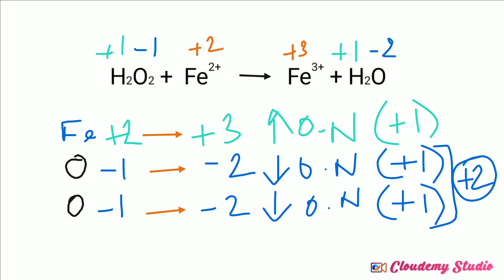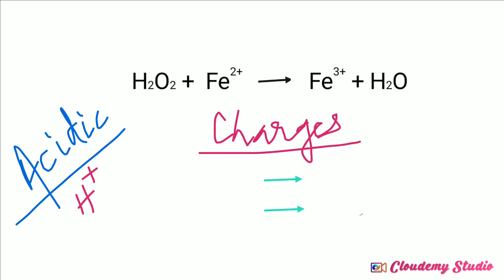The increase in oxidation number is plus 1 and the total decrease is plus 2. Using this plus 2, we need to multiply the iron ion on the right hand side. Using this 1, we need to multiply oxygen on the right hand side. Iron needs to be multiplied by 2 times on the right hand side, but oxygen only one time, so it is not necessary to be mentioned. On the left hand side, iron appears only once but two times on the right hand side, so we need to multiply that iron 2 plus ion also by two times.